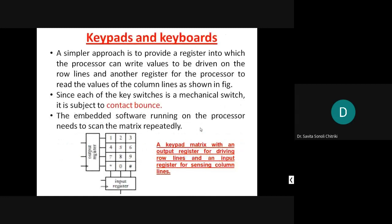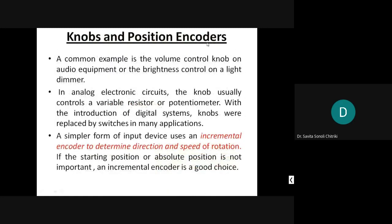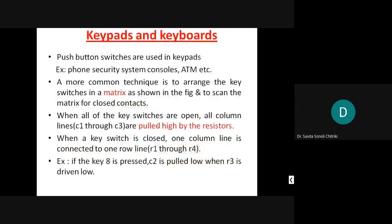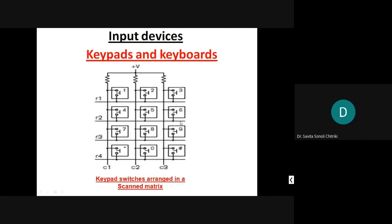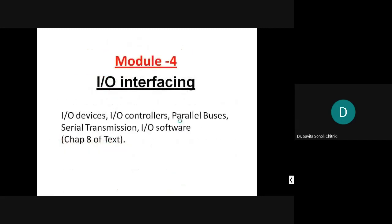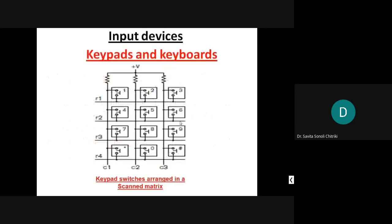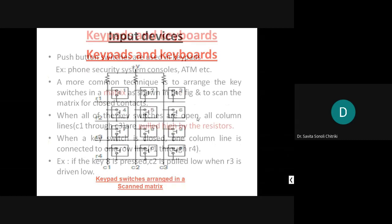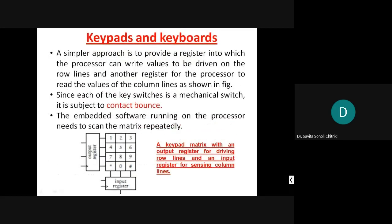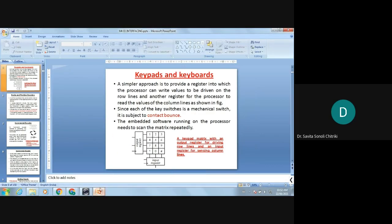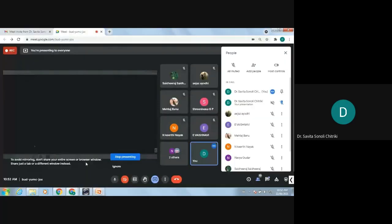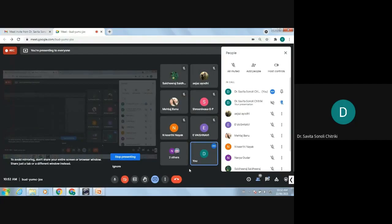The next input device is knobs and position encoders, which we will stop at for this class. When you come for the next class, draw the figures for module 4 I/O interfacing. The first device we studied is keypads and keyboards. Also complete the last topic on signal integrity — how noise is introduced and what is done to reduce noise — and come prepared for the next class.